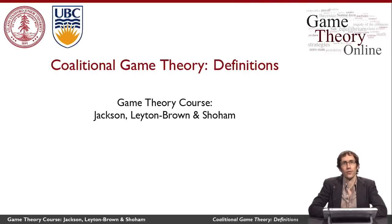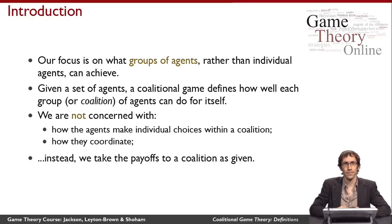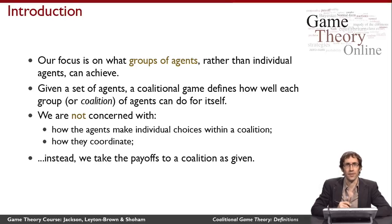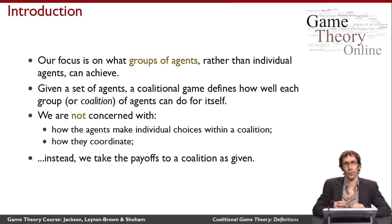This video is going to define coalitional games and explain what they're used for. Coalitional games, unlike the non-cooperative games that we've talked about so far, don't model individual agents taking actions. Instead, they think about groups of agents acting together. The idea is that we think about a set of agents and ask what coalitions could form — what groups of agents could choose to work together.